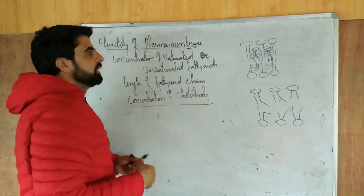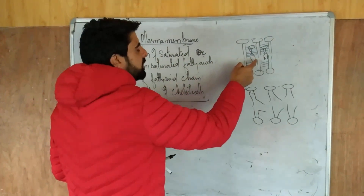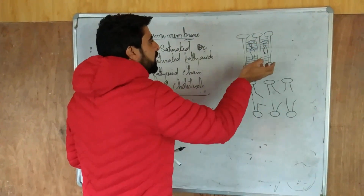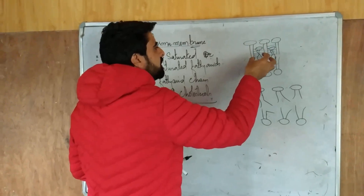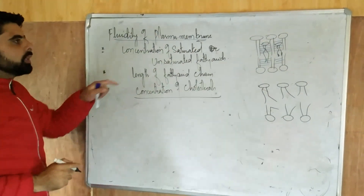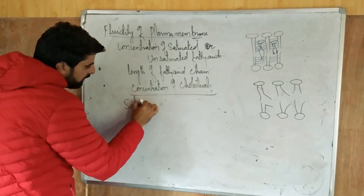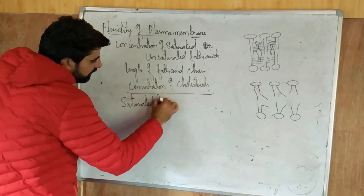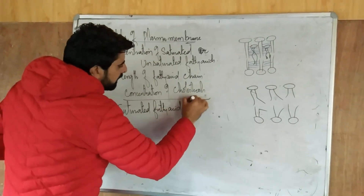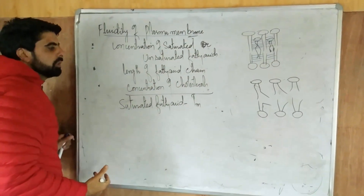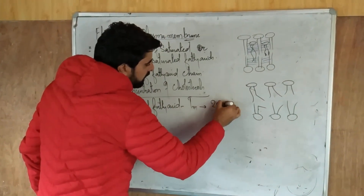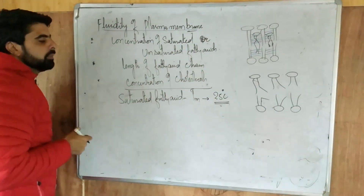Whenever you have to provide the temperature so as to break down the hydrophobic interactions or to change to the unsaturated form, for that you have to provide the temperature. We call that temperature the melting temperature or melting point. So if you take saturated fatty acids, the Tm, which is melting temperature, is both high, about 25 degrees Celsius for saturated fatty acids.